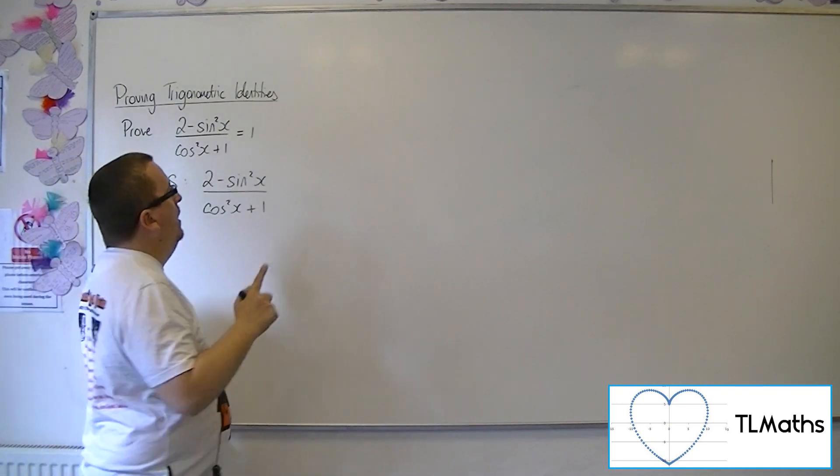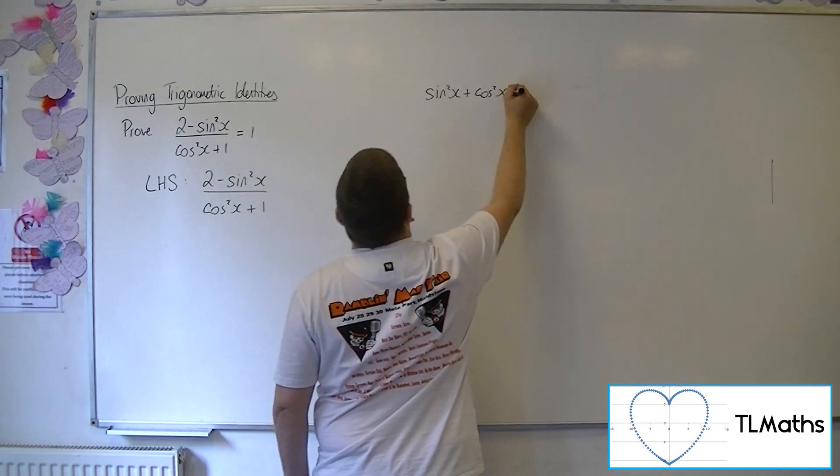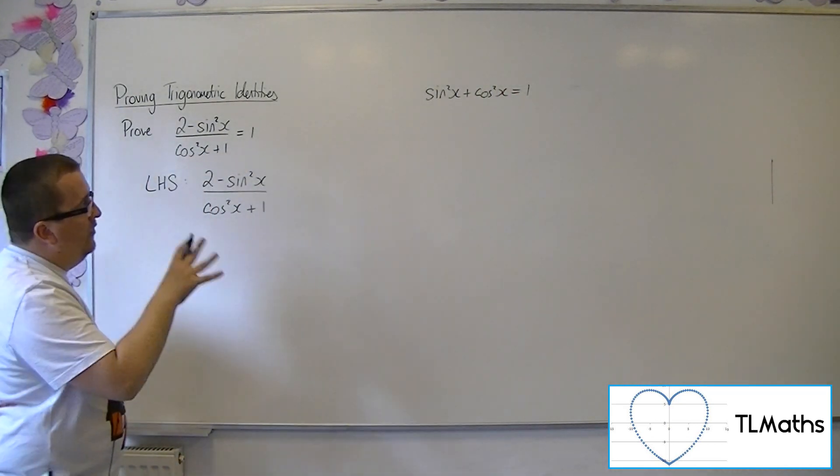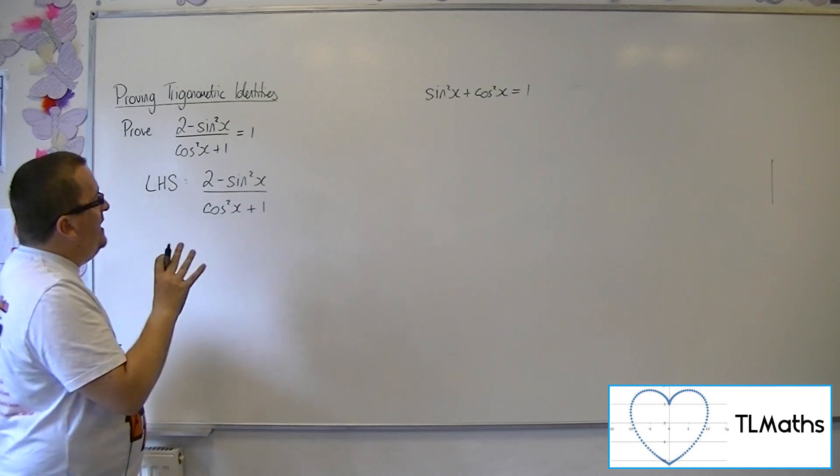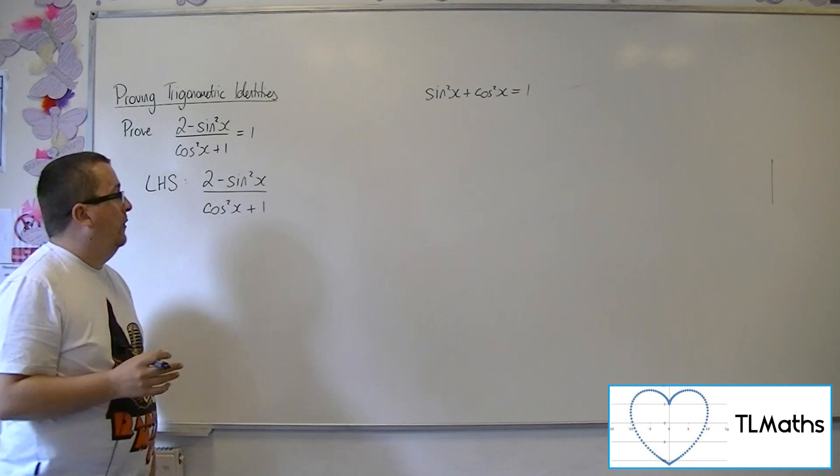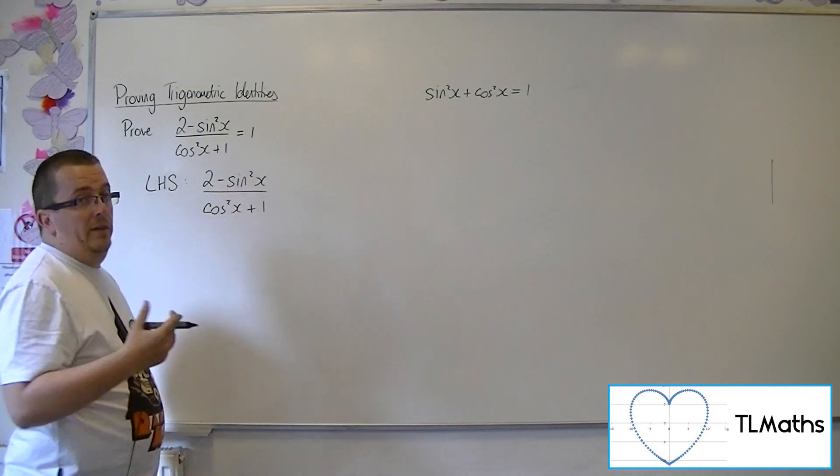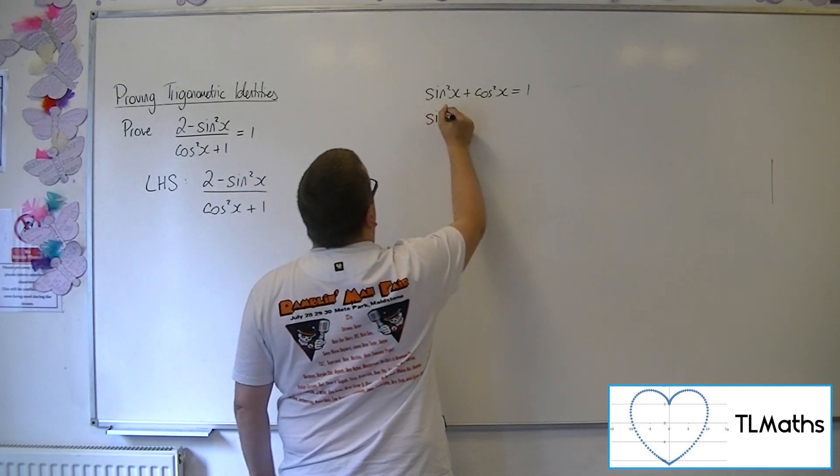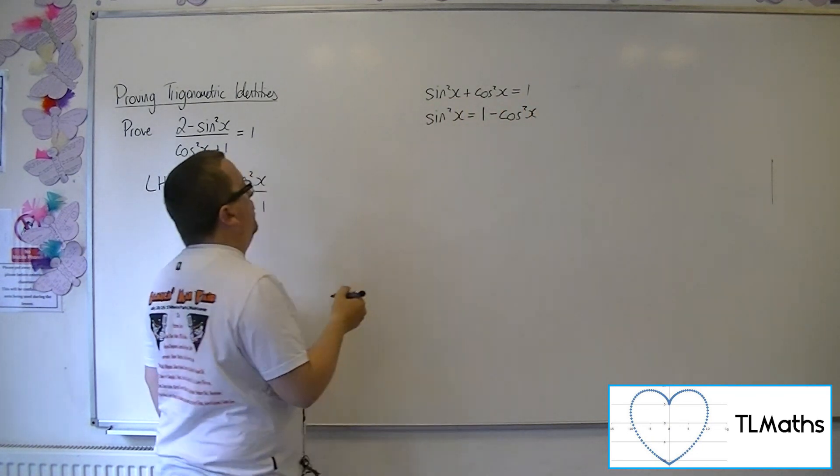Now, I know that sine squared plus cos squared is 1. So I can use that trig identity to swap any sine squared or cos squared that I want to work with. So that sine squared there, for example, if I replaced that with 1 minus cos squared.